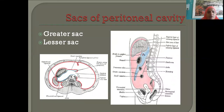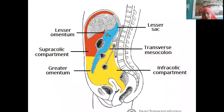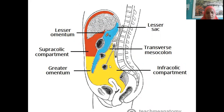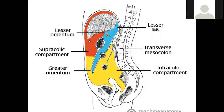The peritoneal cavity is divided: the orange and yellow areas are all the greater sac, divided by the transverse colon as the plane of cutting. Above the colon is the supracolic compartment; below this plane is the infracolic compartment.